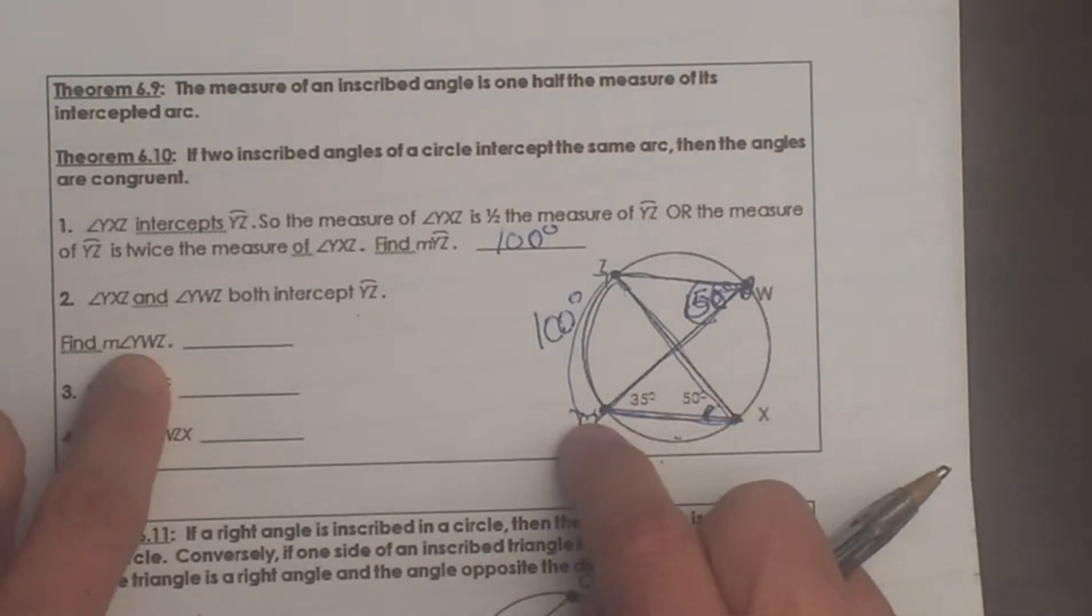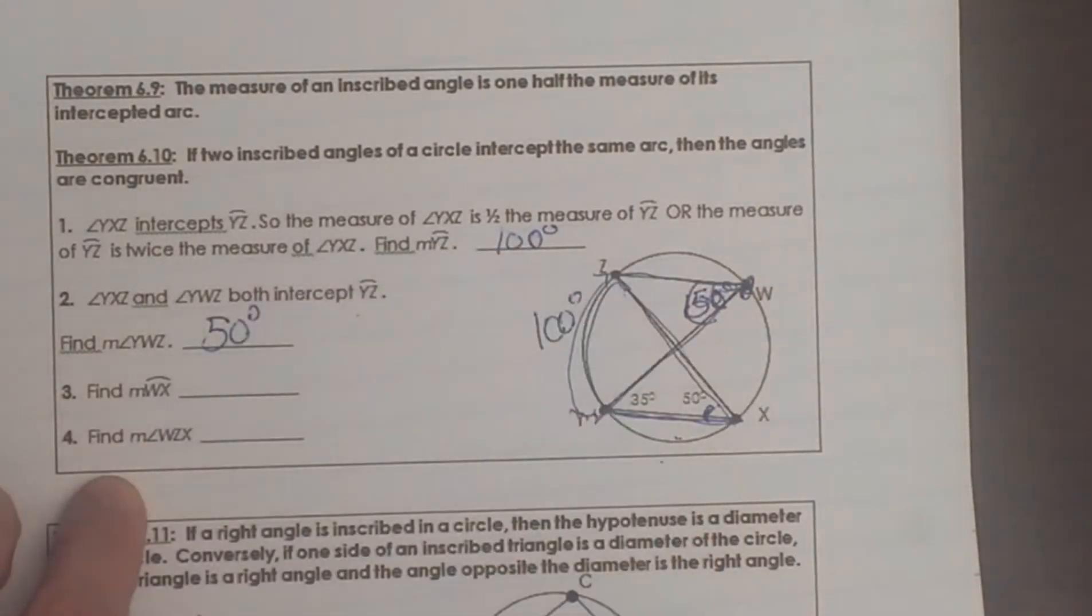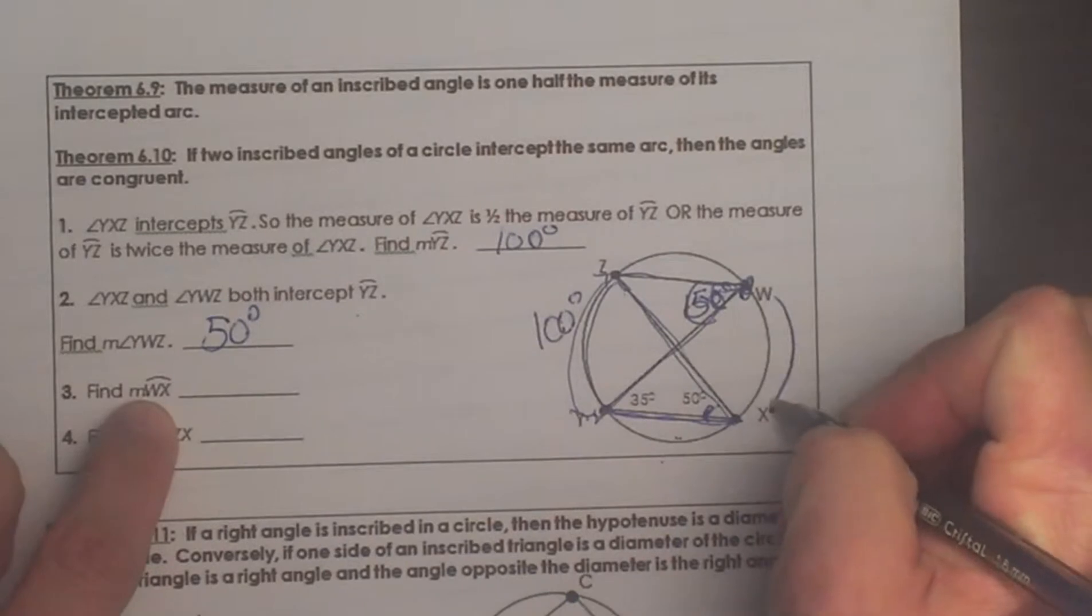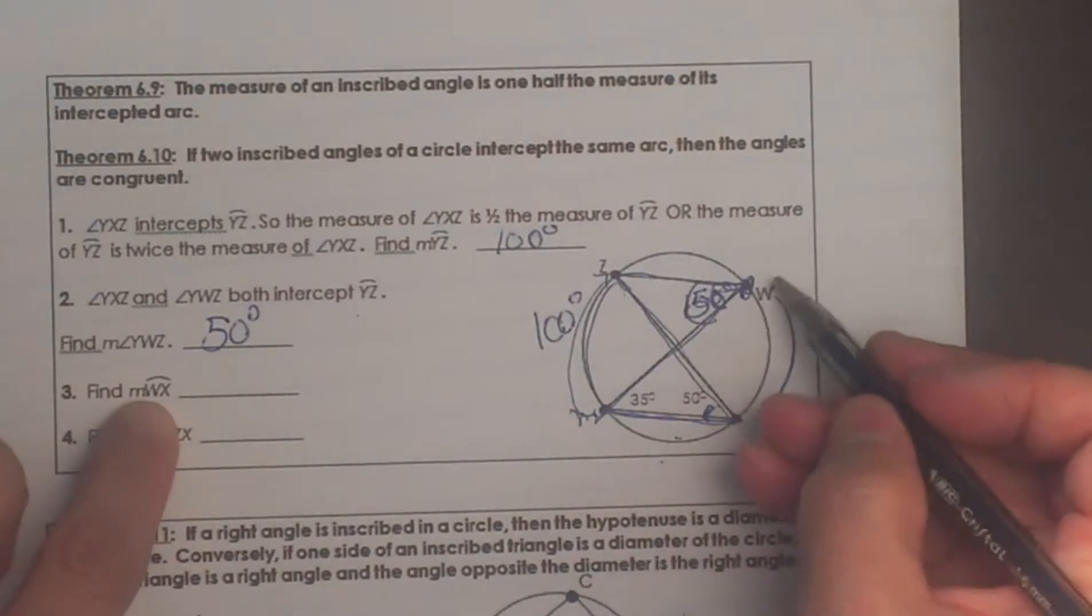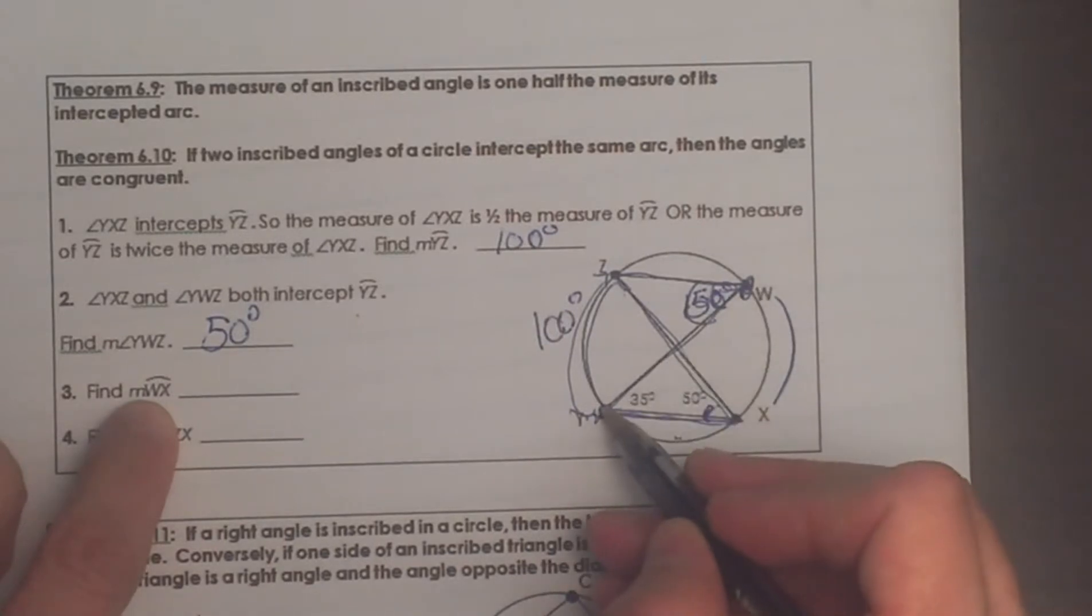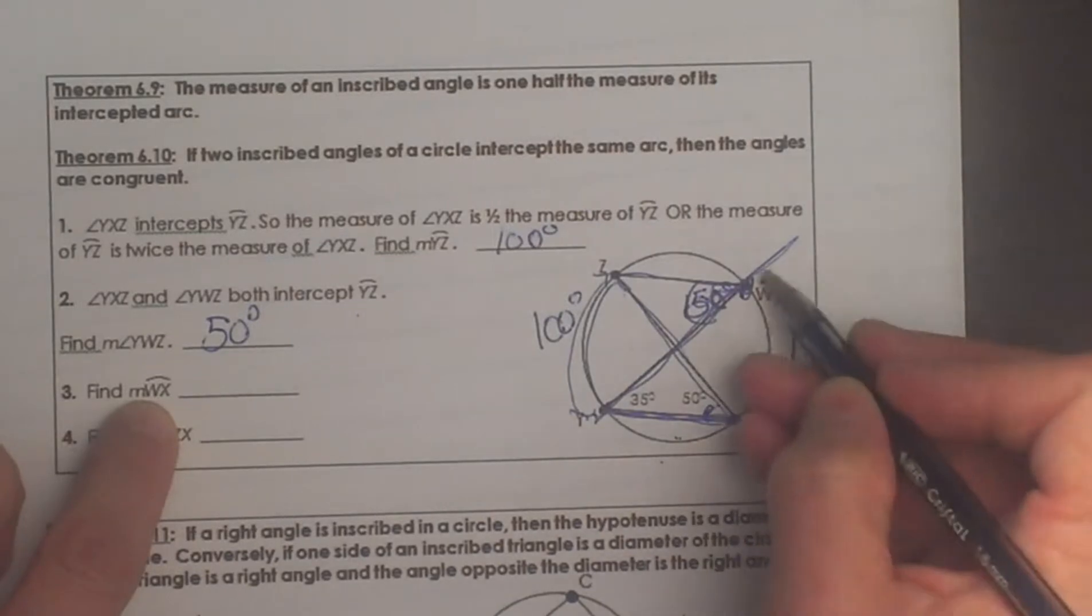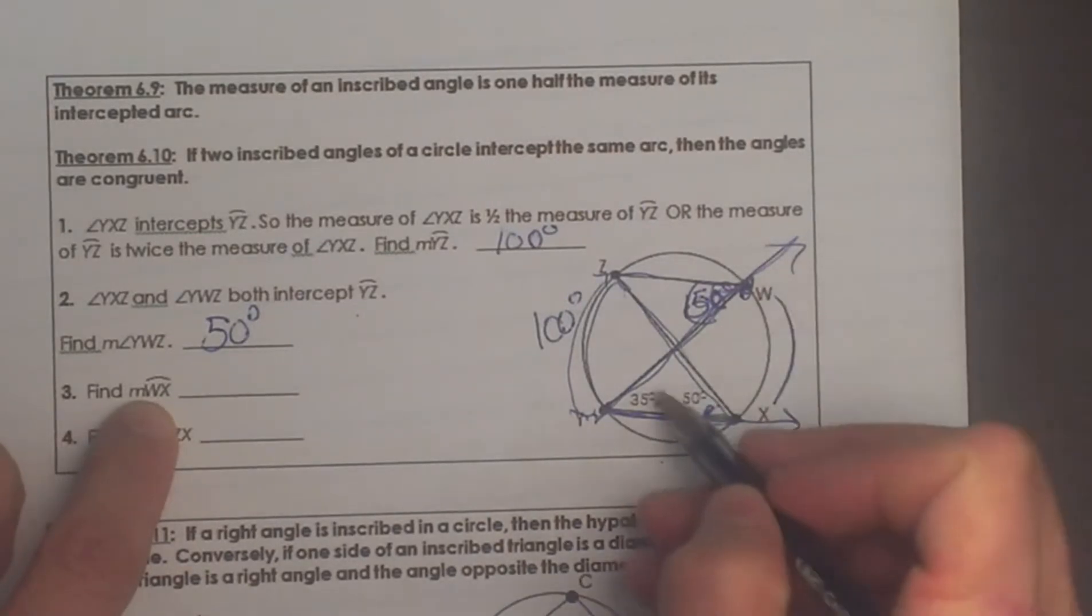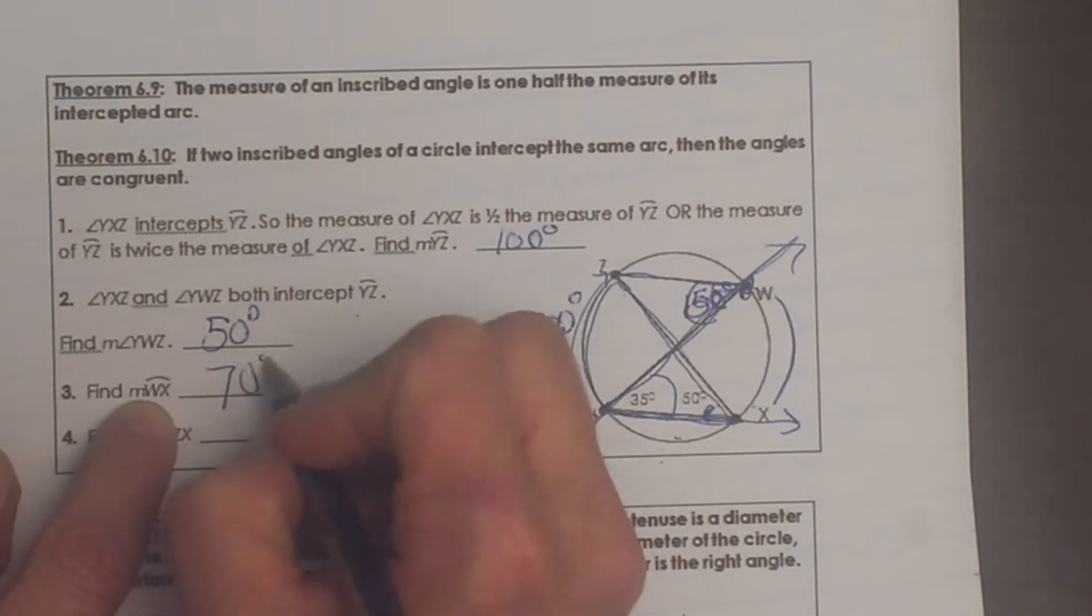So let's find y, w, z. We just figured that out and that is 50. How about the arc w, x? Here is the arc w, x. Which angle or angles intercept it? If you look w, y, x there is an angle and it intercepts that arc. See how I have extended the sides. So if this is 35 that means the arc has to be double that which is 70.